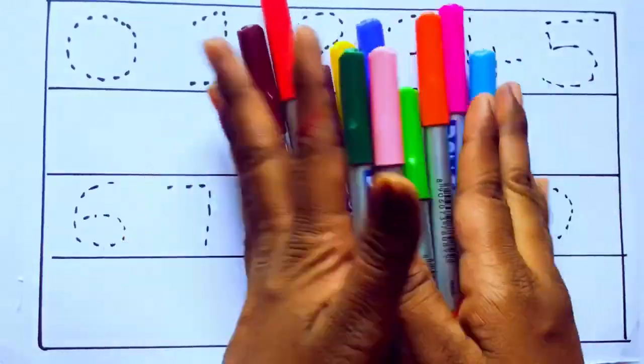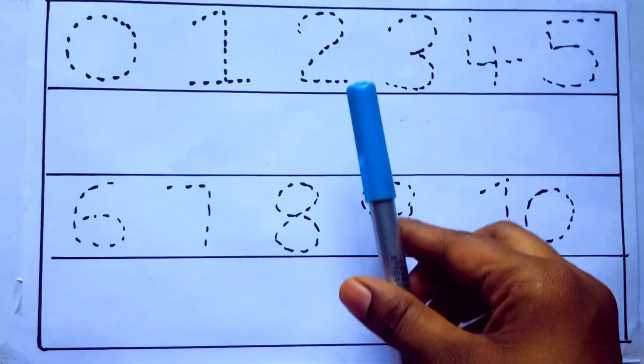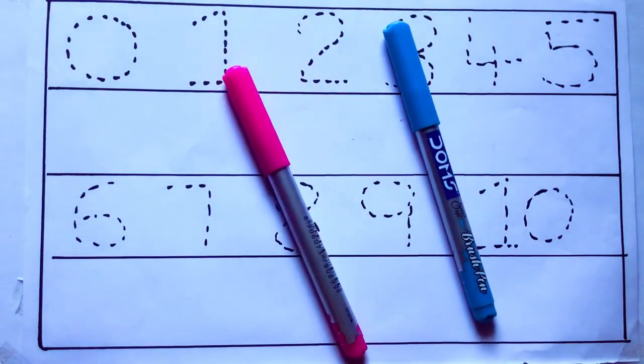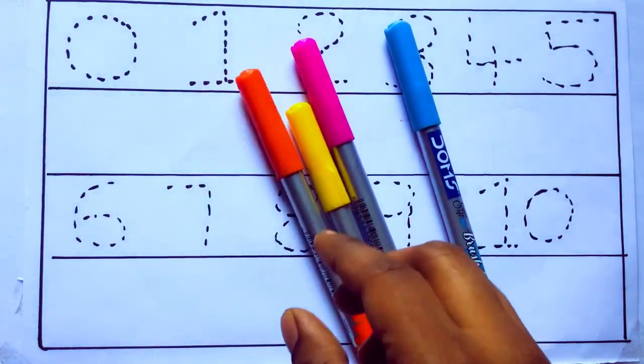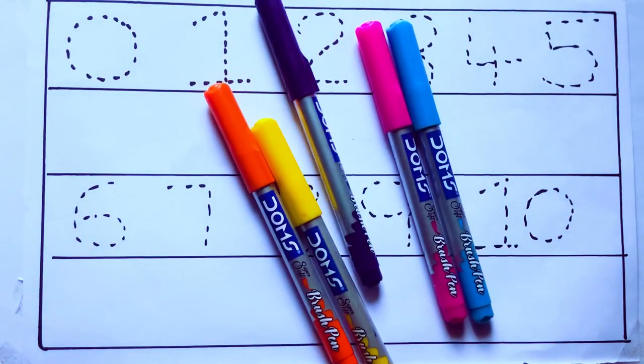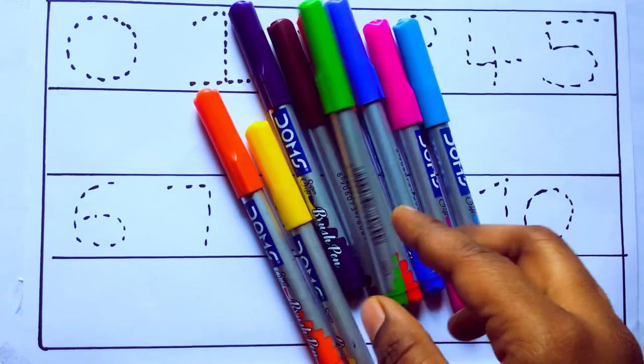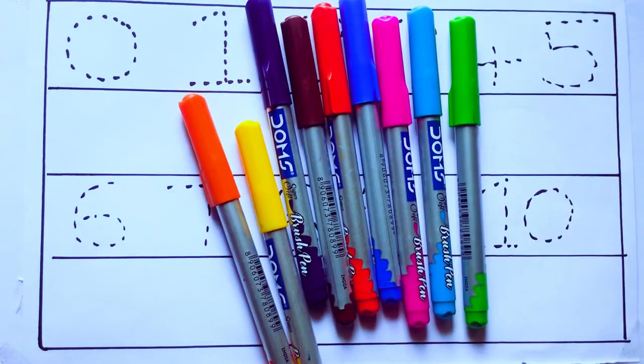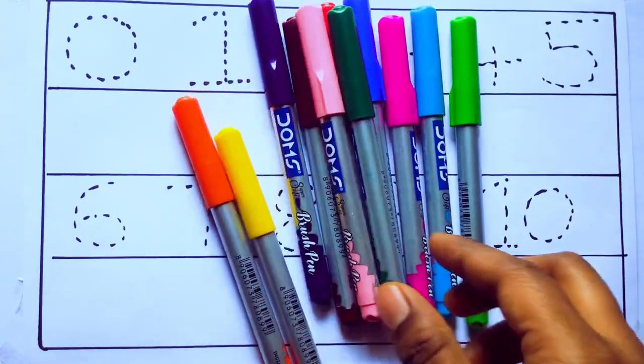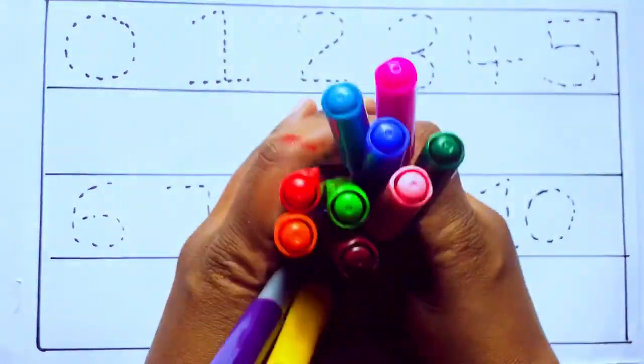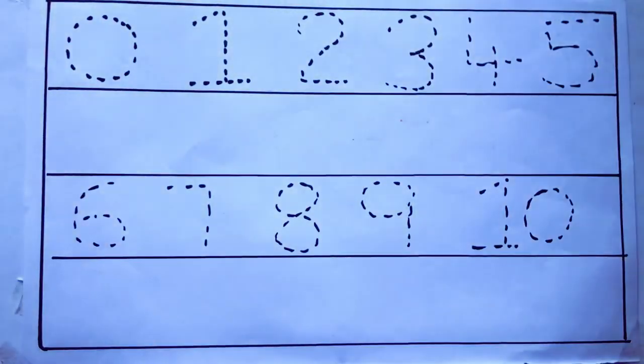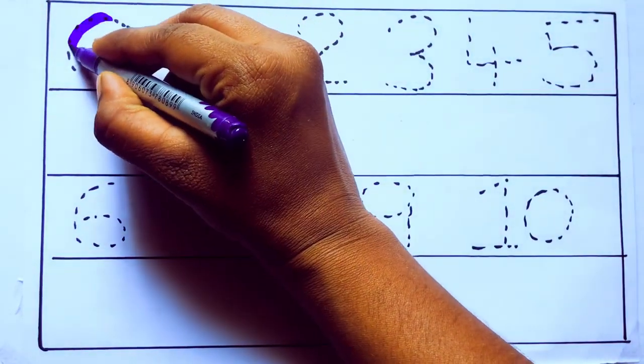Let's learn some colors. These are all the color pencils. Let's learn the names: sky blue color, pink color, yellow color, orange color, violet color, blue color, brown color, red color, green color, blue green color, and pink color. Let's draw numbers.